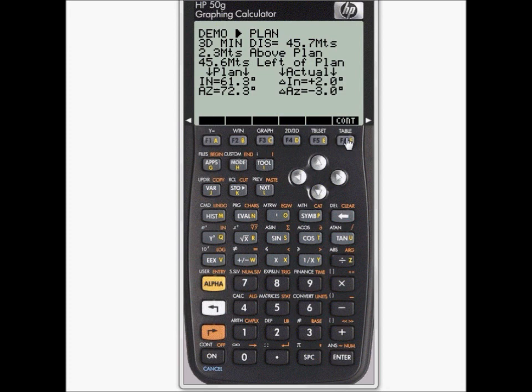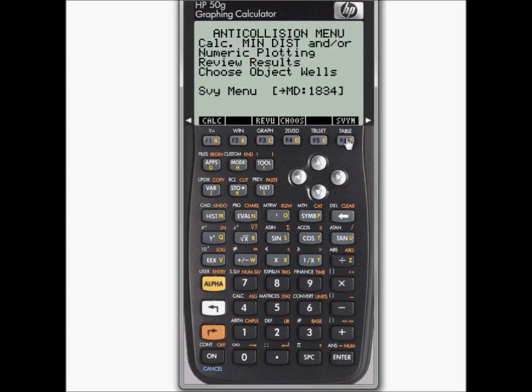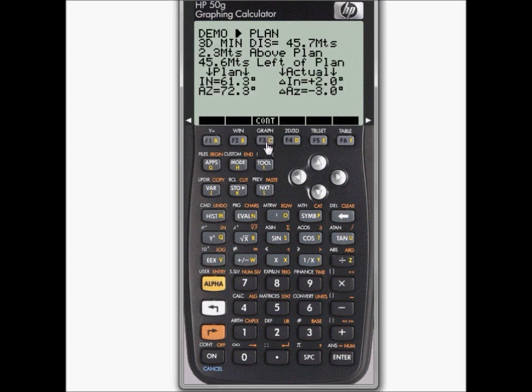So we continue on to the anti-collision menu, and here we see that now you have this option here for review. You can review the result. You could have entered several wells for anti-collision, and it would calculate one after the other really quickly. And then at the end, when you are returning to the menu, it will show you all of them, all the results, one by one.